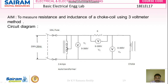Voltmeter V1 has a rating of 0 to 300 volts to measure the supply voltage. There is another voltmeter V2, also 0 to 300 volts, to measure the voltage across the rheostat. And there is another voltmeter V3, rated 0 to 300 volts, to measure the voltage across the choke coil.